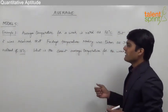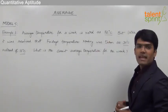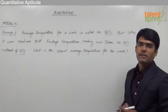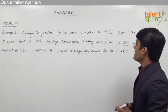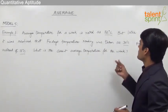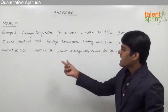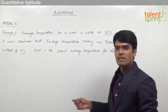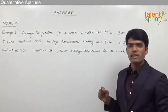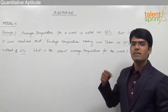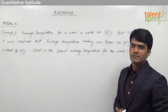As you can see, the average temperature of the week was calculated as 32 degrees. But later it was discovered that one of the values was taken as 30 whereas the actual value was 16. From this data we are supposed to find out what should be the correct average temperature for the week.